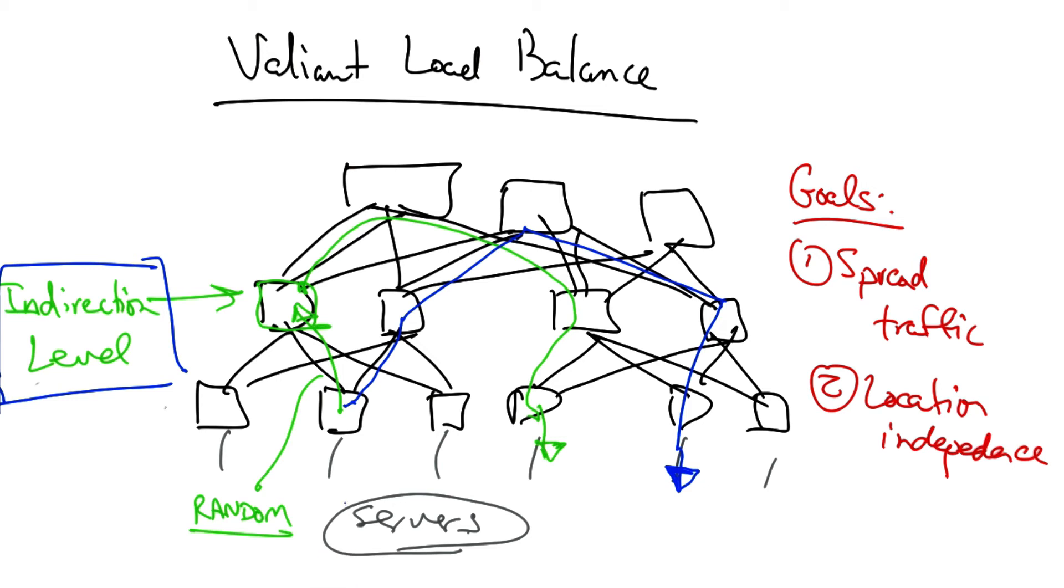So in this lesson, we have explored how Valiant load balance can be used on a slightly modified topology to achieve better load balance than in traditional fat tree networks without an indirection layer and Valiant load balancing.